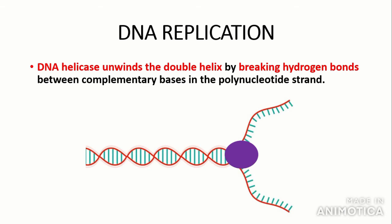The first step in semi-conservative DNA replication is that DNA helicase unwinds the double helix by breaking the hydrogen bonds between complementary bases in the polynucleotide strand. DNA helicase breaks the base pairs apart — importantly, it breaks the hydrogen bonds. This forms two single-stranded DNA strands, which we call template strands.